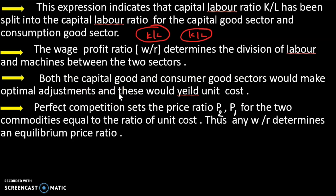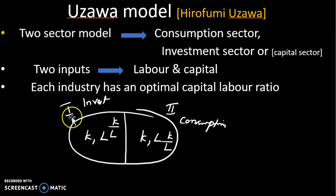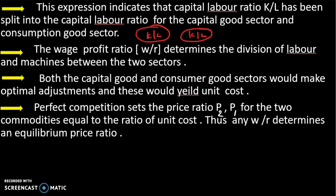The capital good sector and consumer good sector have optimal adjustments and these would yield unit cost. Perfect competition sets the price ratio P2 to P1 for the two commodities equal to the ratio of unit costs, where P2 is the consumer sector price and P1 is the investment sector price.